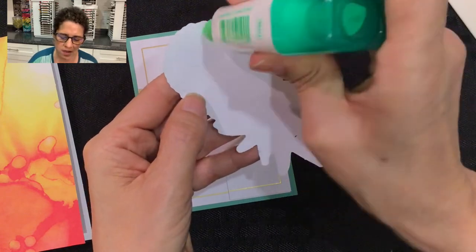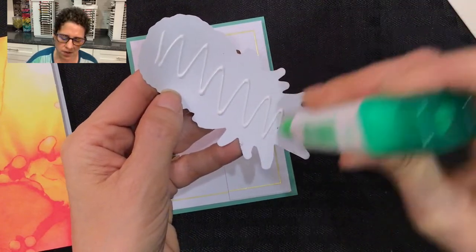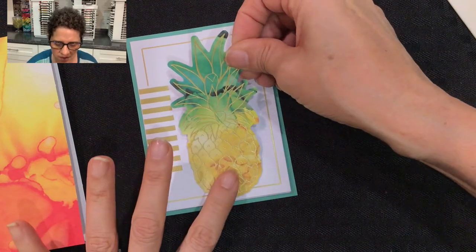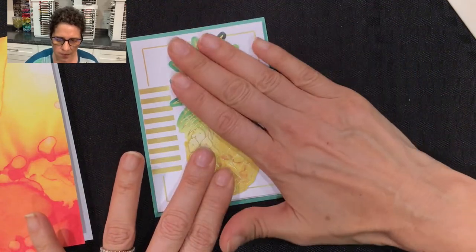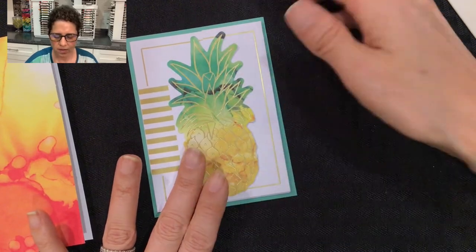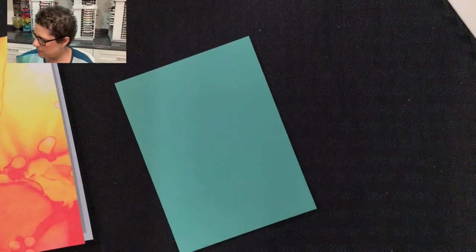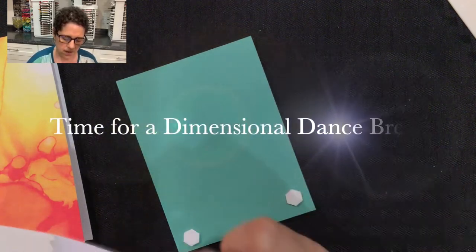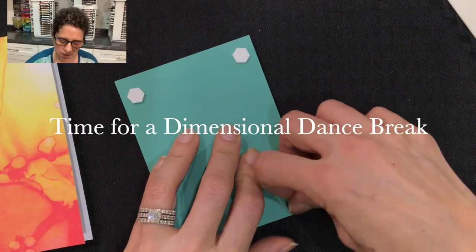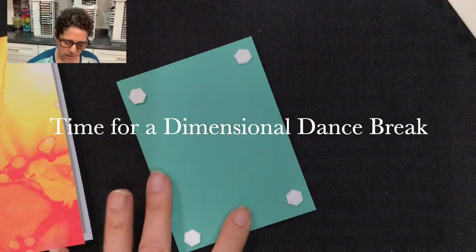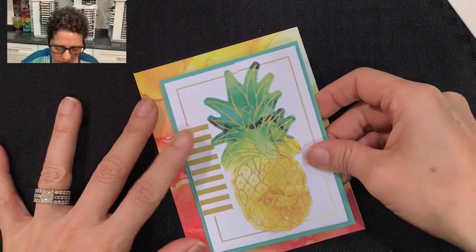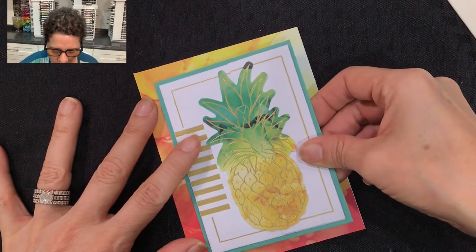It does have this strip down the middle but that is where our pineapple image is going to go. Let me take the pineapple image and some liquid glue, and then I'm going to lay that right on that center strip. Then I'm going to flip this over and add four dimensionals to the back. I'll bring over the card base and we're going to stick this right on the front of this colorful card base.